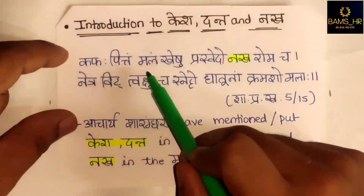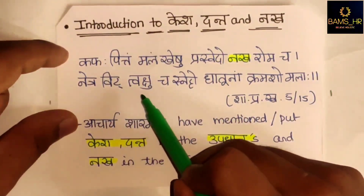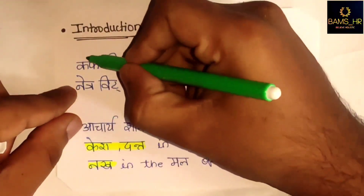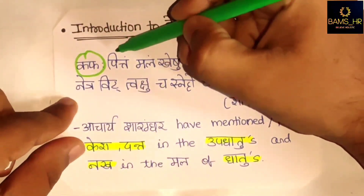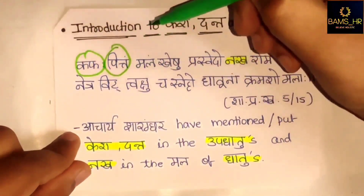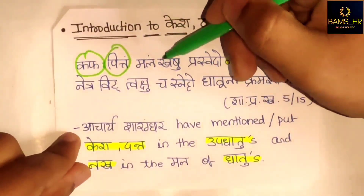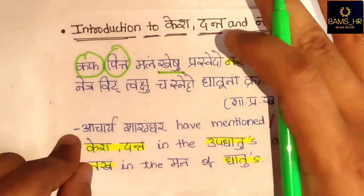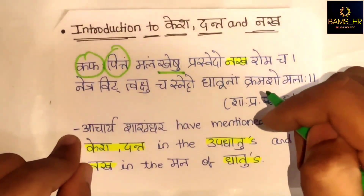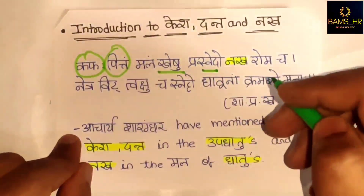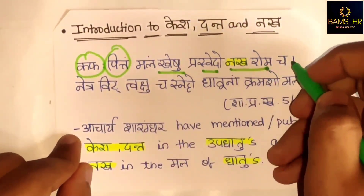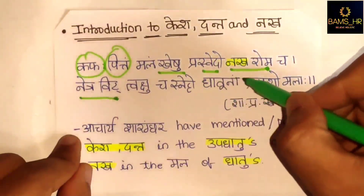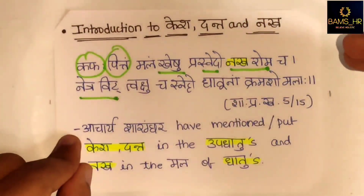Kapha Pitham Malam Kheshu Pras Vedu Nakharomacha Netrevet Tukshu cha Snehu Dhatu Naam Kramashu Malaha, as told by Sharangadhara in the Prathamakanda. Kapha is the mala of Rasadhatu, and Pitta - mainly Ranjakapitta - is the mala of Rakdhatu. Kheshu refers to any cavity; mainly Karna and Nasa Mala are considered the mala of Mamsa Dhatu, Sveda is the mala of Medha Dhatu, Nakha and Roma are the mala of Asthi Dhatu, and Netra Mala is the mala of Majja Dhatu. Thus Acharya Sharangadhara has described the malas of Dhatus.